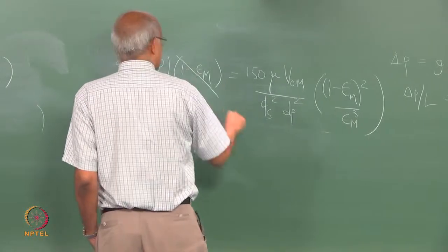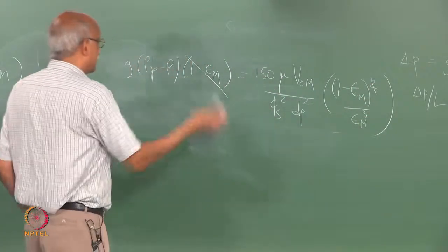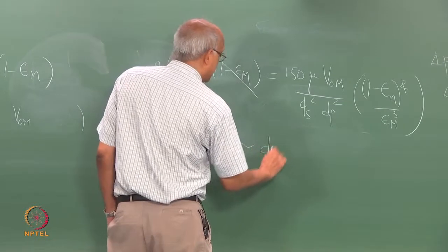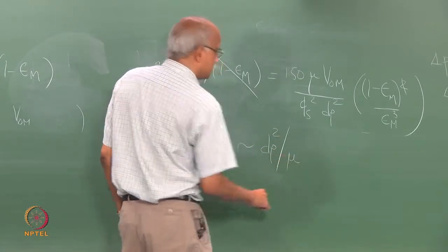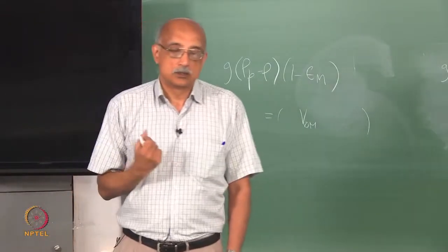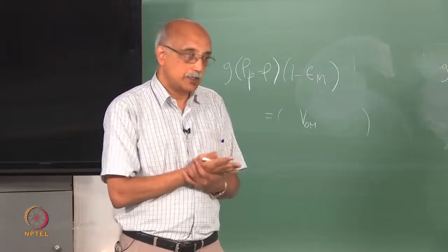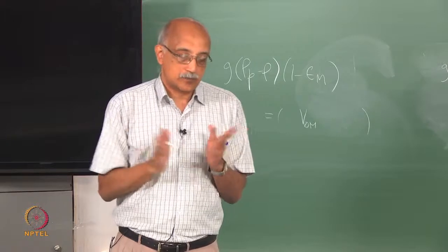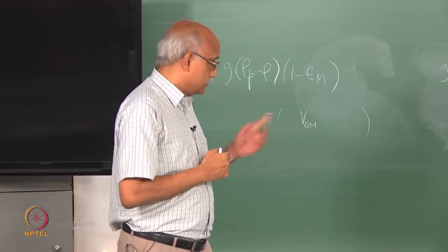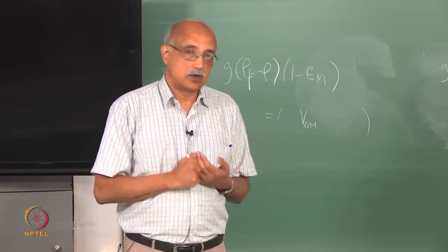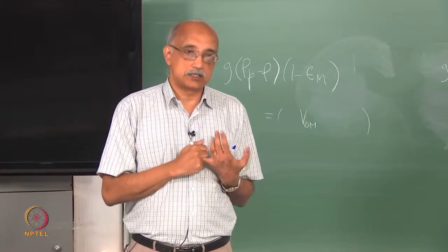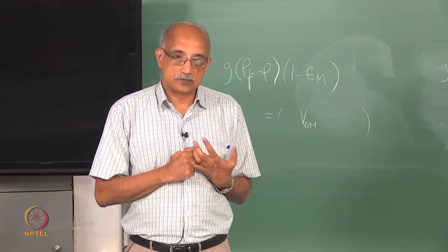Cancelling terms and rearranging, V0-m scales as dP squared over mu. For a bed of very fine particles operating at Reynolds numbers of order 1 or less than 100, the superficial velocity for minimum fluidization scales roughly as particle size squared divided by the fluid viscosity. Experimentally the exponents are not exactly 2 and minus 1, because any model of such a complex phenomenon is idealized and there can be small additional effects.